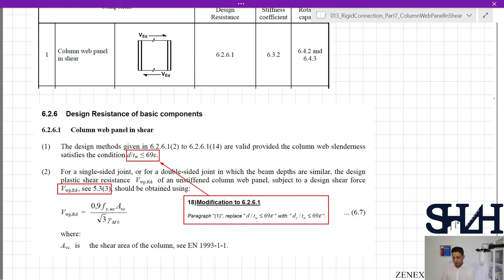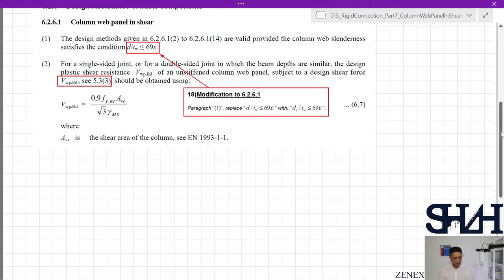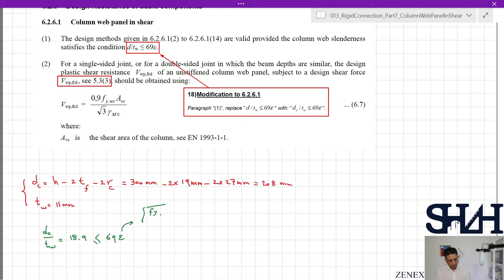Paragraph 1 replaces d over tw with dc divided by tw. dc is the net height of the column web, calculated as height minus 2 times tf minus 2 times r. For HEB 300, that's 300 millimeter minus 2 times 19 millimeter minus 2 times 27, which equals 208 millimeter. Web thickness is 11 millimeter. Now we can check: dc divided by tw is 18.9, and epsilon is square root of fy divided by 235 megapascal, which is 0.81.